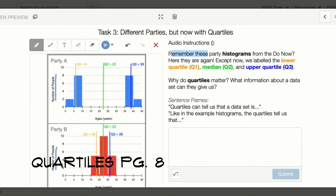Remember these party histograms from the do now? Here they are again. Except now we labeled the lower quartile Q1, the median Q2, and upper quartile Q3. Why do quartiles matter? What information about a data set can they give us?